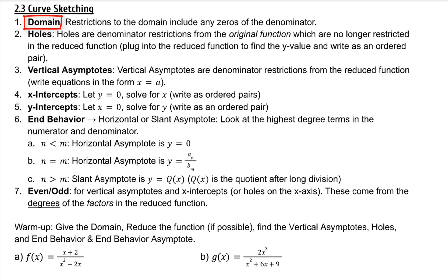For the domain, restrictions to the domain include any zeros of the denominator. Holes are denominator restrictions from the original function which are no longer restricted in the reduced function. Vertical asymptotes are denominator restrictions from the reduced function.